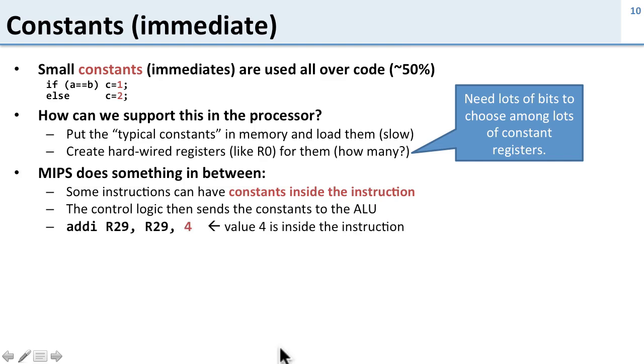So here's the example we saw. We saw add I and it's got this value 4, and this 4 is encoded inside the instruction itself.